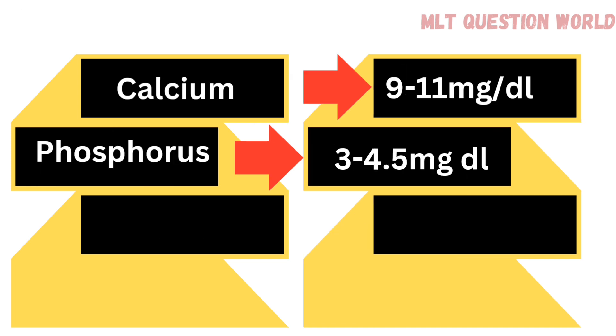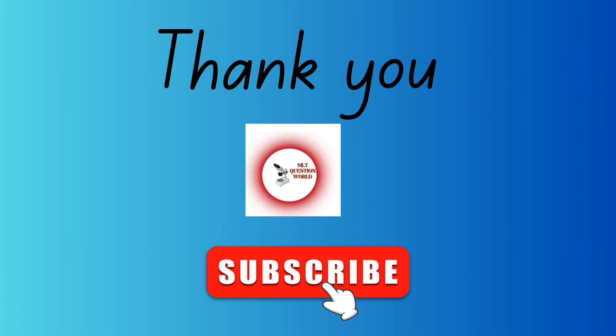Calcium and phosphorus are also important. Normal value of calcium is 9 to 11 milligram per deciliter. Phosphorus is 3 to 4.5 milligram per deciliter. Please note that normal values may differ with different methods and locations. We will discuss every function test in detail in upcoming videos, so don't forget to subscribe the channel. Thank you.